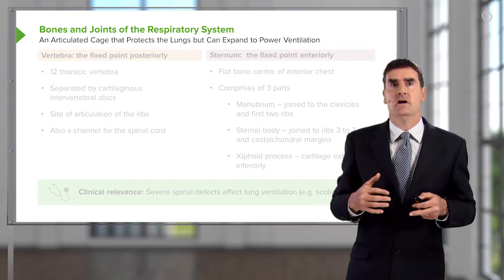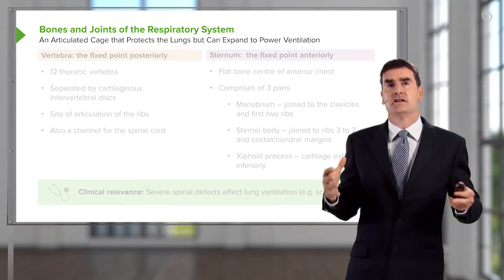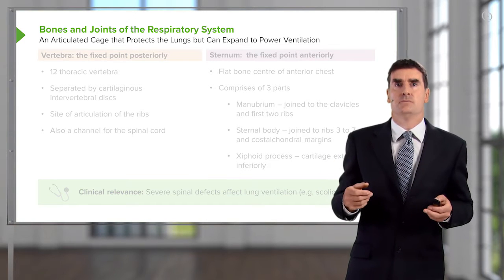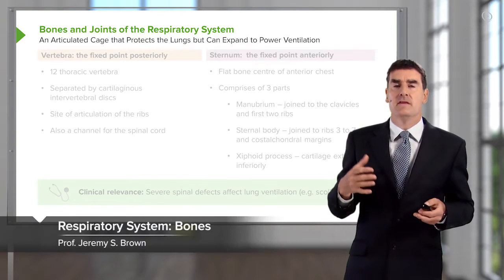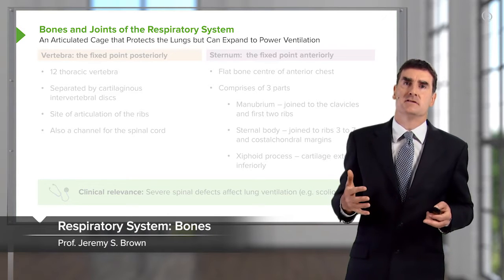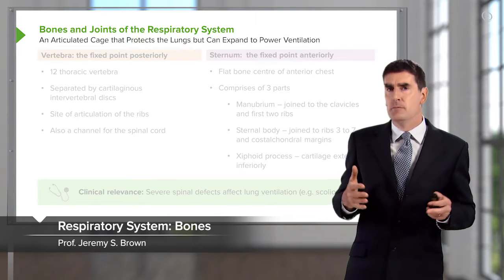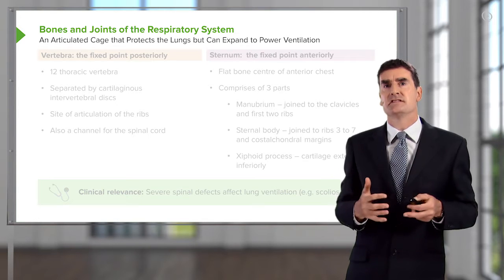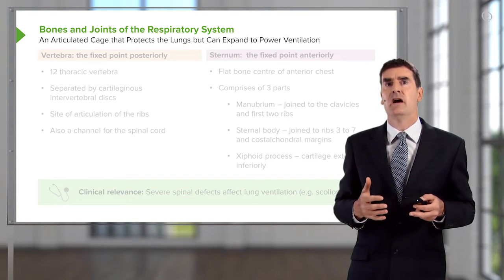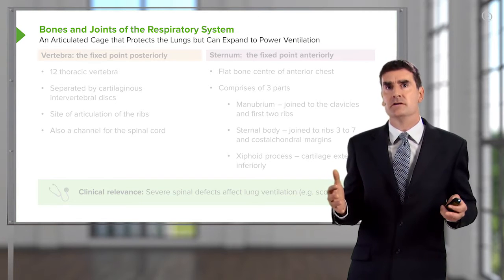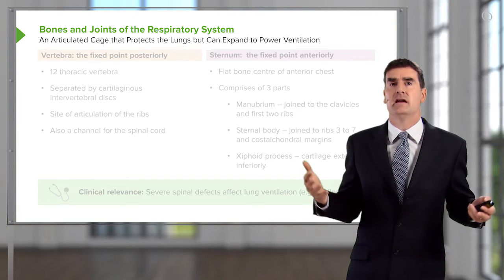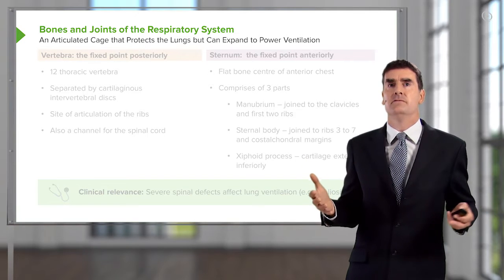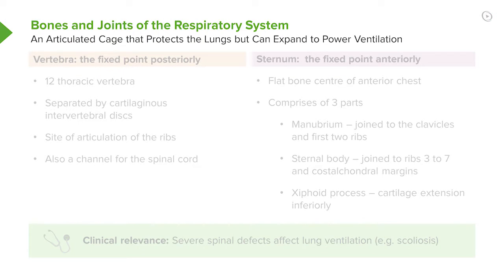The lungs are kept within an articulated skeletal cage, which is important because it protects the lungs from damage, but also for function — it is expansion of the skeletal cage that allows the lungs to expand and take air in from the atmosphere. This requires a fixed point, and there is a fixed point posteriorly.